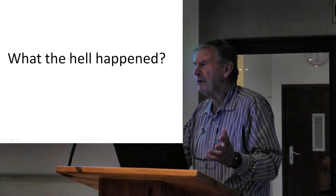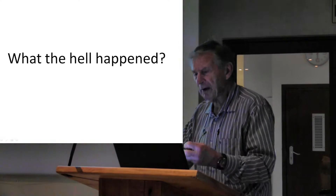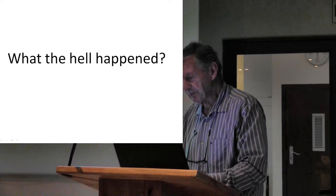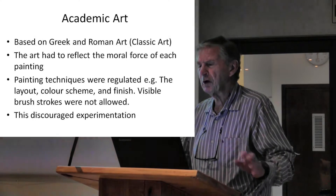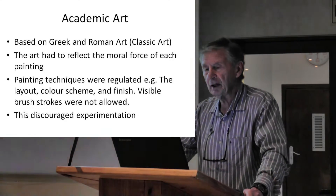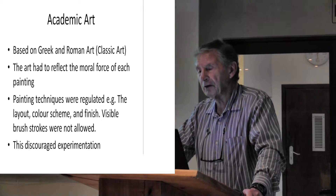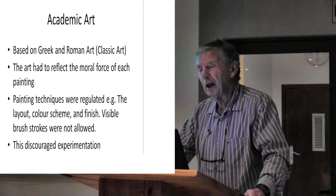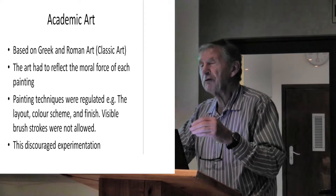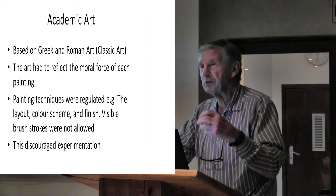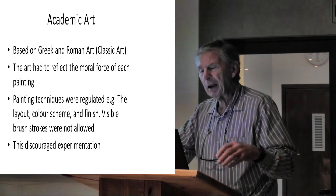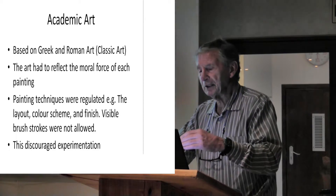So what the hell happened? What changes? Why did these changes take place? What stopped these people from going on? We first have to look at academic art. Academic art was essentially based on Greek and Roman art — the so-called classical art. The important thing about academic art: it had to reflect the moral forces of each painting. Painting techniques were strictly regulated.